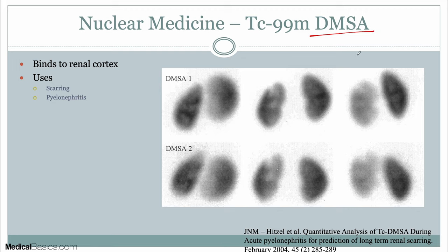DMSA is our last common nuclear medicine study for the kidneys, and it's very different because it binds to the renal cortex. It's really only commonly used in kids for scarring and pyelonephritis — you're trying to see if there are any areas of decreased uptake. In this example, there's a very obvious wedge-shaped filling defect within the left superior pole, which in this situation is an example of pyelonephritis.